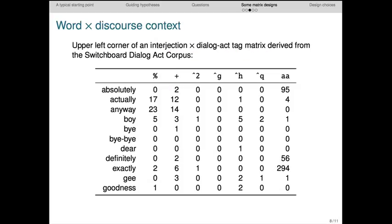Here's a design that's more unusual. I've called it a word by discourse context matrix. The columns here are dialogue act tags used in the switchboard dialogue act corpus. They encode things like interjection and agreement. For example, this 95 here means that the word absolutely occurred 95 times in agreement dialogue acts. So you can probably already see that useful structure would emerge from this design.